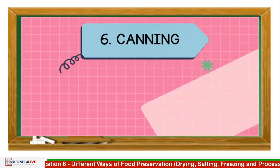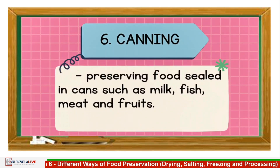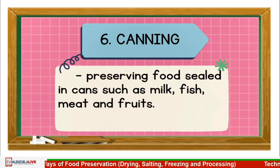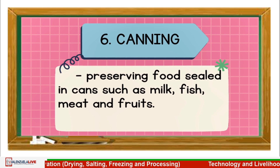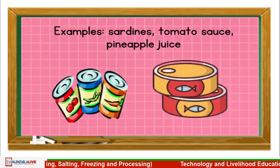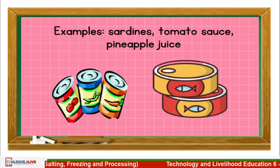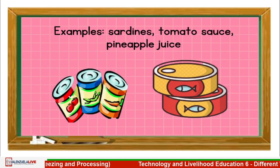Canning — preserving food sealed in cans such as milk, fish, meat, and fruits. For example: sardines, tomato sauce, and pineapple juice.